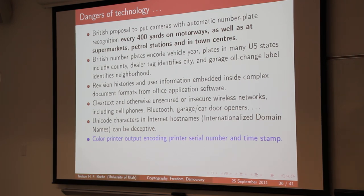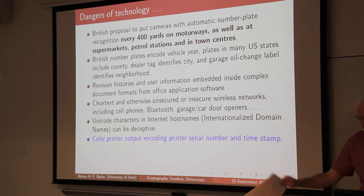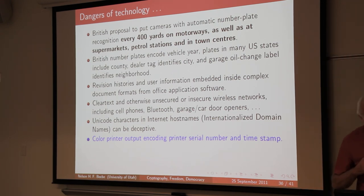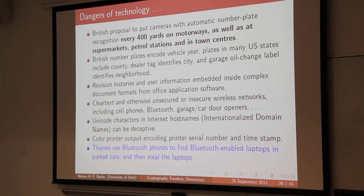Very few people are aware that all color printers manufactured in the United States today, on every output page, print a faint yellow identification of the printer and the time the output was printed — visible with the right kind of light. This is put in at the demand of the U.S. government. So if you're using your great color printer to produce U.S. $100 bills or other things, the FBI or the Secret Service are going to get you. And another example: Bluetooth communications for short-distance wireless, say between keyboards and a computer.